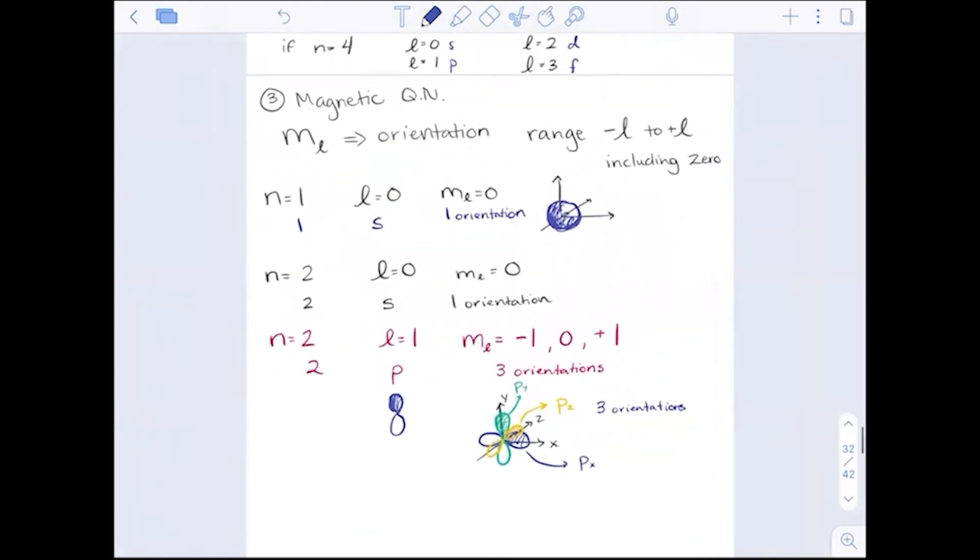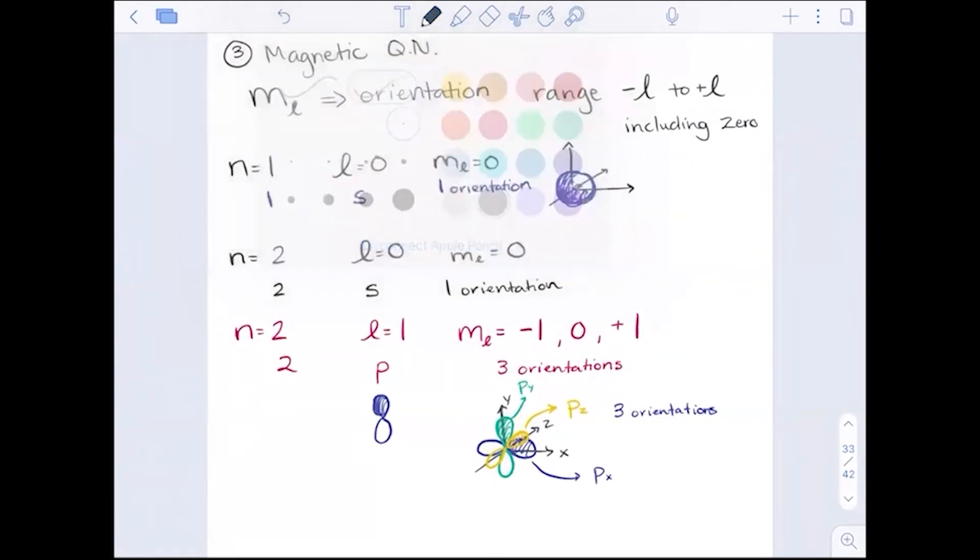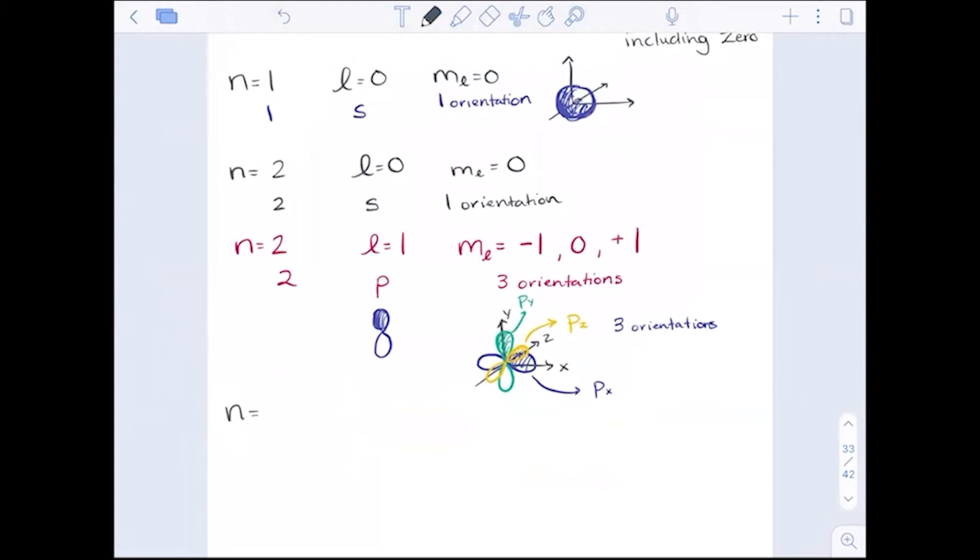Notice how because of that p-shape, that dumbbell-looking shape, the figure eight shape, we can imagine it rotating on the x, y, z axis and looking different. If n equals 3, and l equals 0, ml again equals 0. So the 3s orbital, again, it's a sphere, so the shape is dictating the orientation. n equals 3, l equals 1. The p orbital has an x, a y, and a z orientation. If n equals 3 and l equals 2, the d orbitals. A minus 2, a minus 1, a 0, a plus 1, and a plus 2. Five orientations.